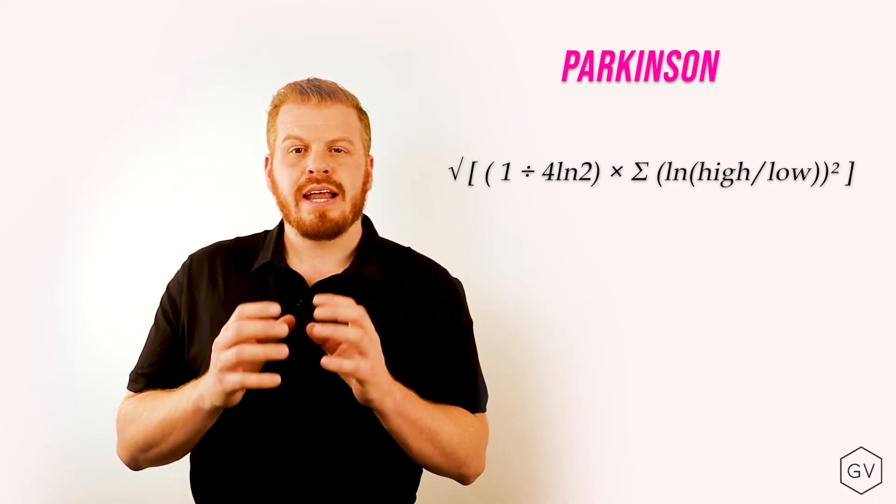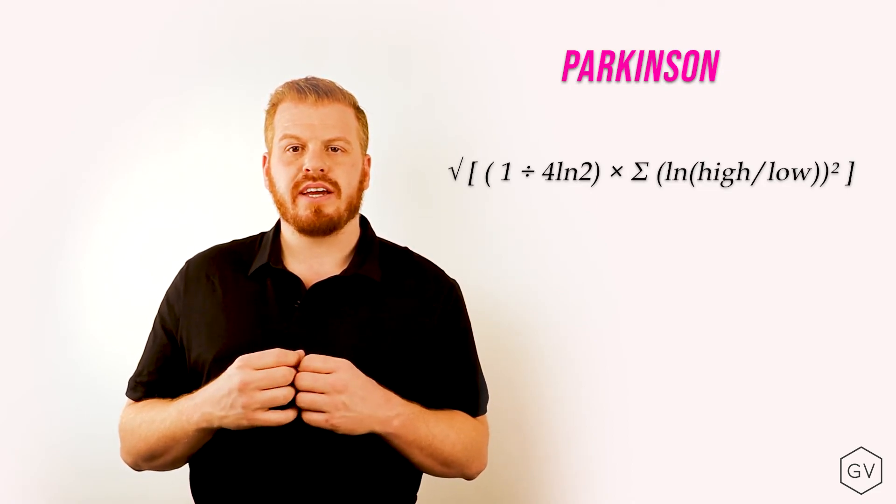There are many other ways to calculate historical volatility. Because GVOL works in the crypto markets, we use the Parkinson model. Unlike the close-to-close, the Parkinson model works very well in continuous markets. It looks at the high and the low of each day, and then applies a diffusion formula to back out the standard deviation.